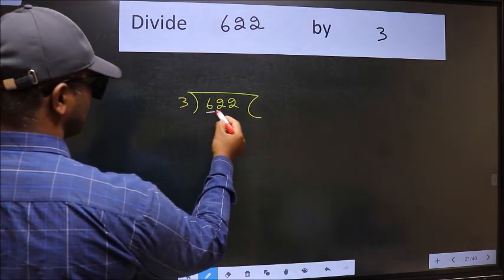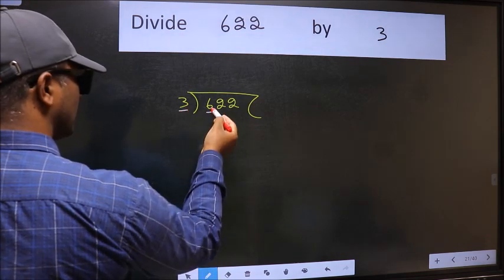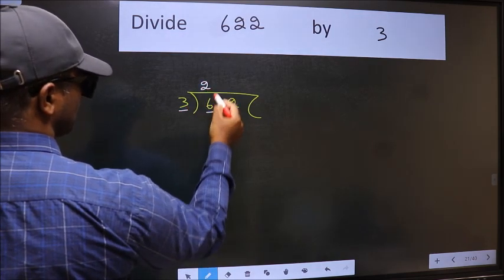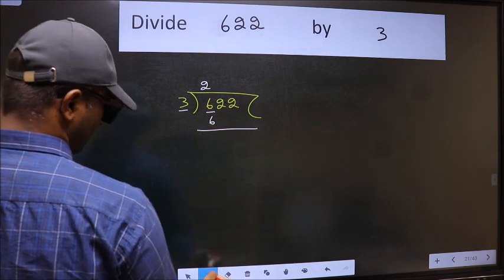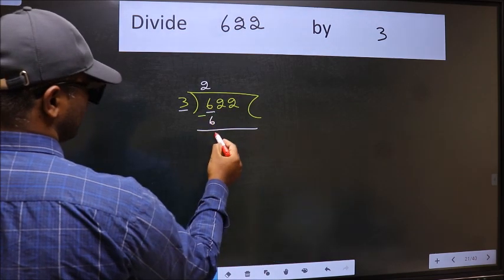Here we have 6 and here 3. When do we get 6 in the 3 table? 3 2's 6. Now we should subtract. We get 0.